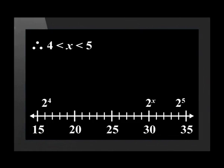Therefore, x lies between 4 and 5. Now we bisect the interval between 4 and 5. Remember, bisect just means divide into 2 equal parts. So x is approximately equal to 4 plus 5 divided by 2, which is equal to 4.5.